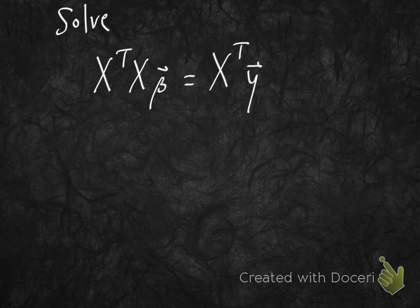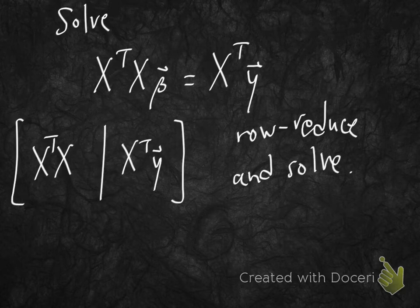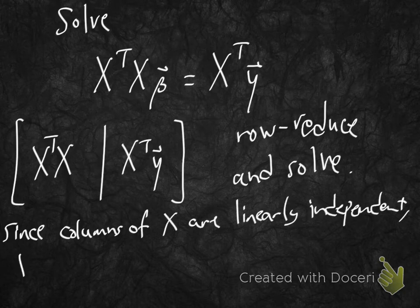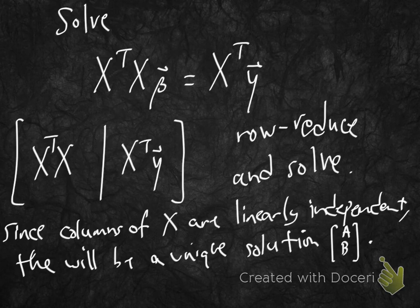To complete this, solve the normal equation X^T X β = X^T y by computing X^T X, computing X^T y, and row reducing to solve. Notice the columns of X are linearly independent — neither column is a scalar multiple of the other — which means there is a unique least squares solution. So there's a unique A and B, giving a unique curve y = A·cos(x) + B·sin(x) that best matches this data.